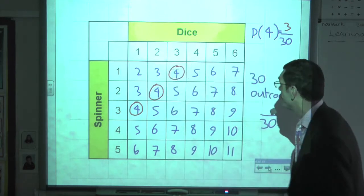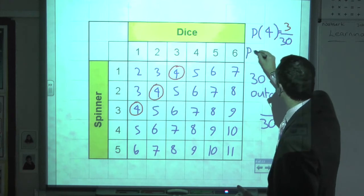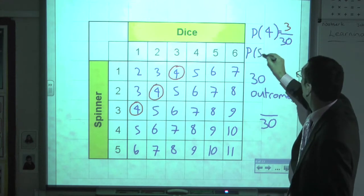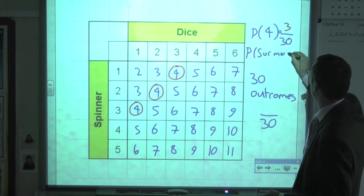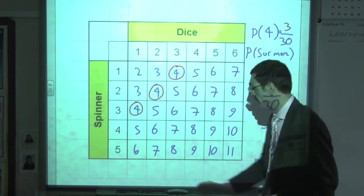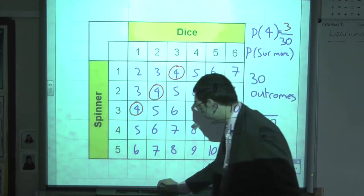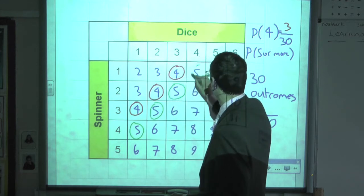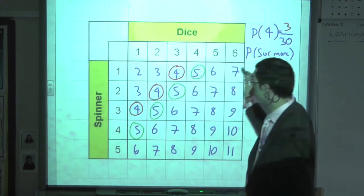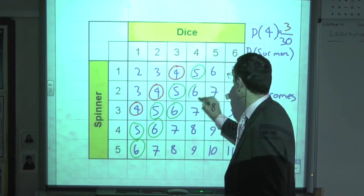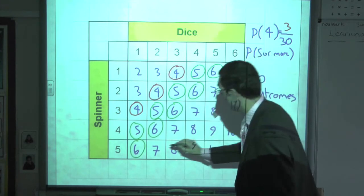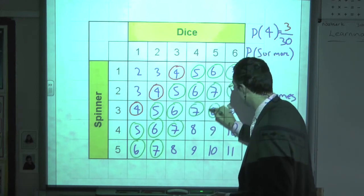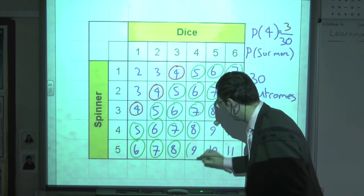We'll worry about simplifying these all at the end. Now, for example, if I want to find out the probability of more than, say 5 or more, what I need to look at now is all scores of 5s or more. So that's going to be all of these.